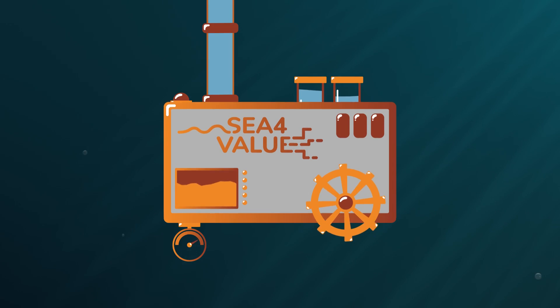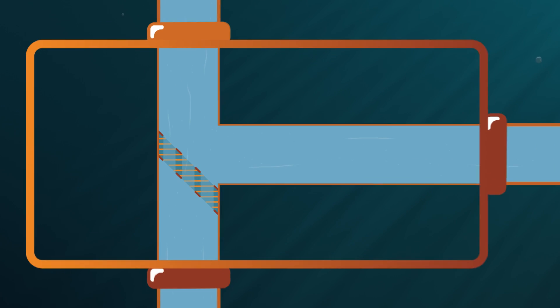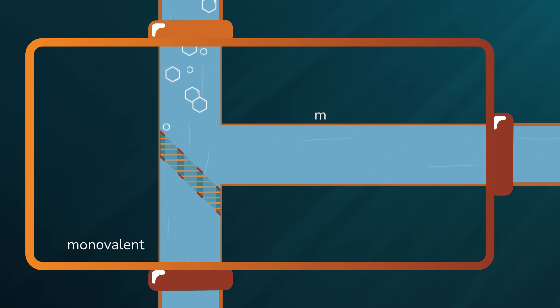Initially, we have a pre-treatment in which we aim to obtain two different streams, one containing monovalent ions and the other containing multivalent ions.